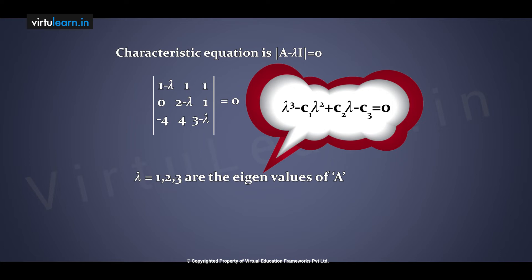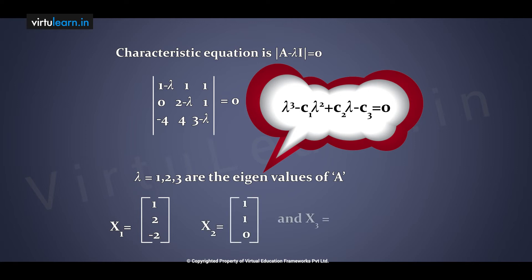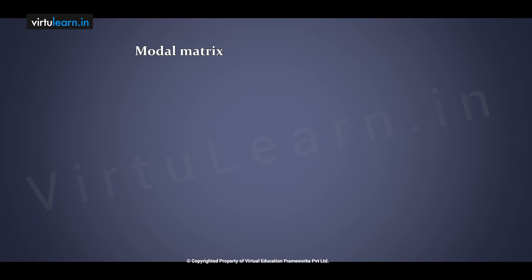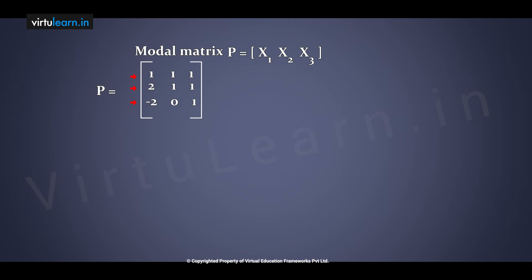The eigenvector corresponding to lambda equal to 1 is X1 equal to [1, 2, minus 2]. The second eigenvector corresponding to lambda equal to 2 is X2 equal to [1, 1, 0]. The third eigenvector corresponding to lambda equal to 3 is X3 equal to [1, 1, 1]. Construct the modal matrix by placing these eigenvectors as columns.